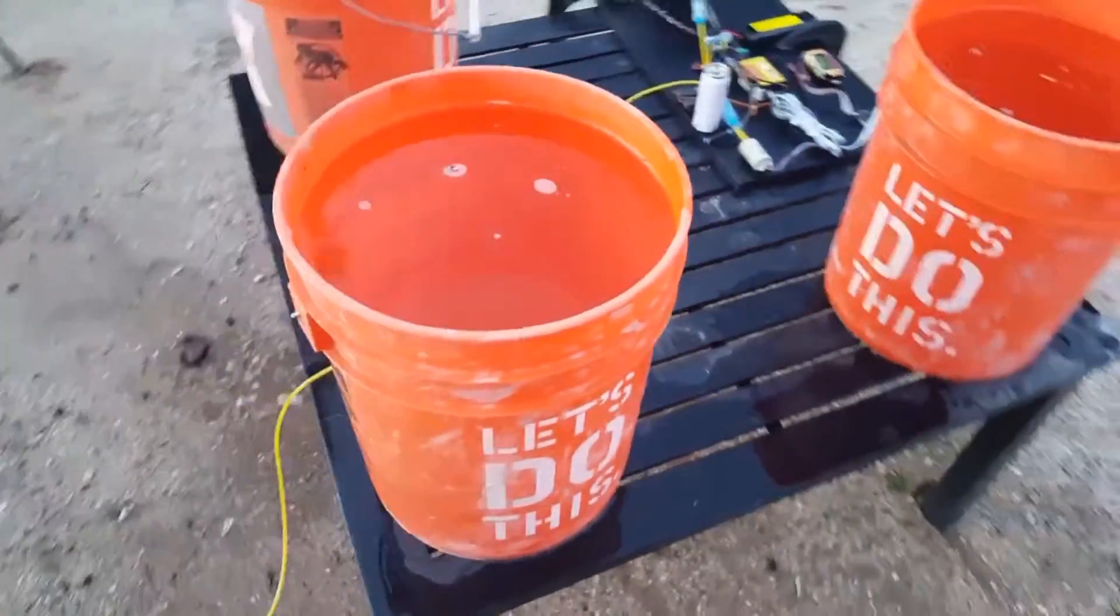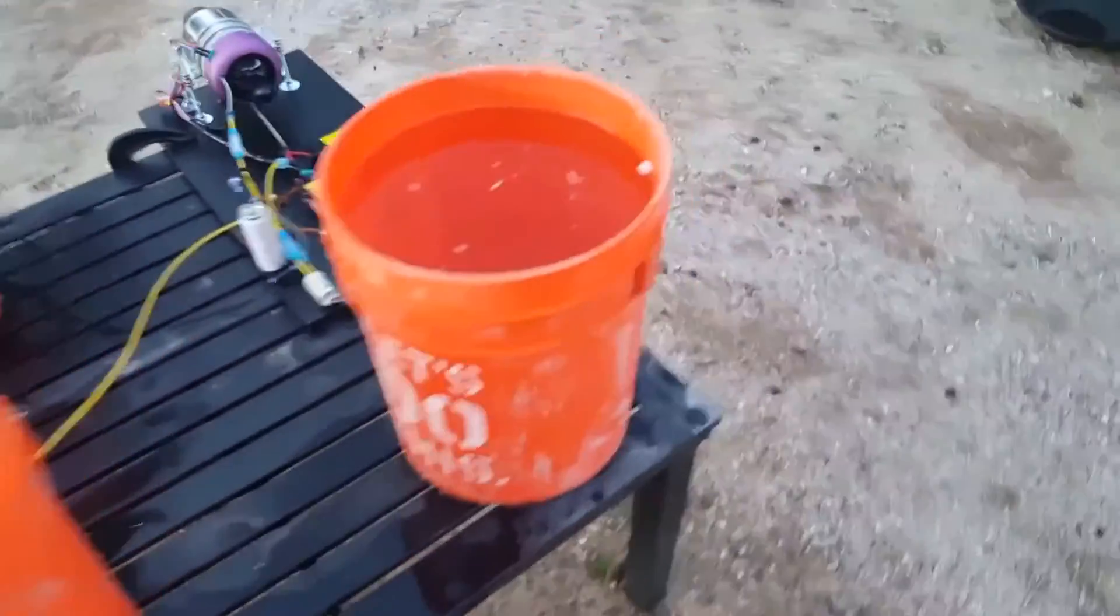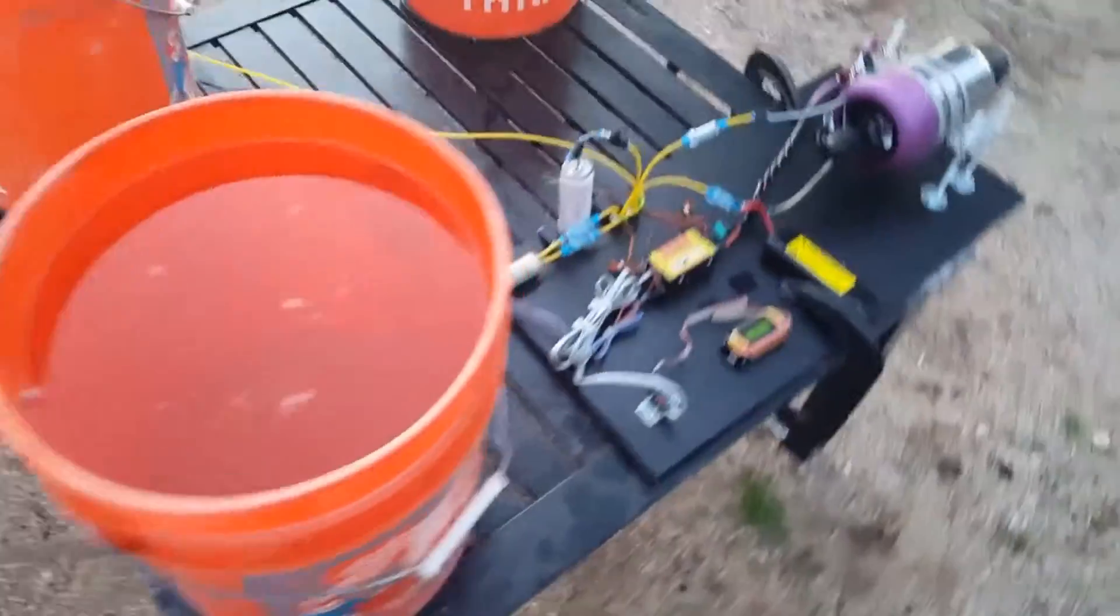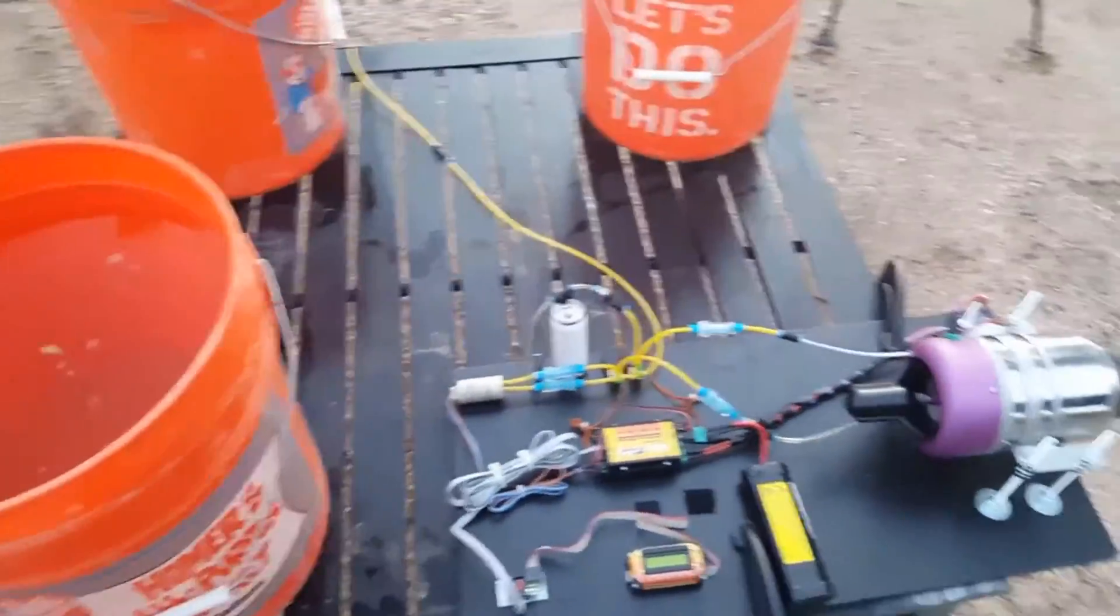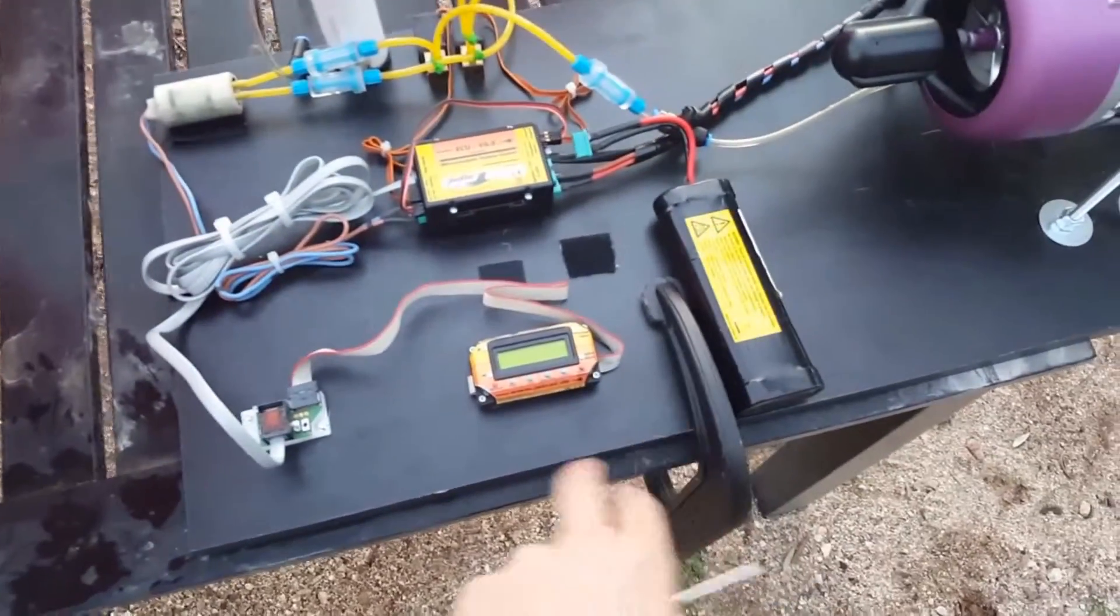I got my ballast, these are basically three five-gallon buckets filled with water just to kind of hold it down. This table is extremely light without it. I got some C clamps holding the board to the table.